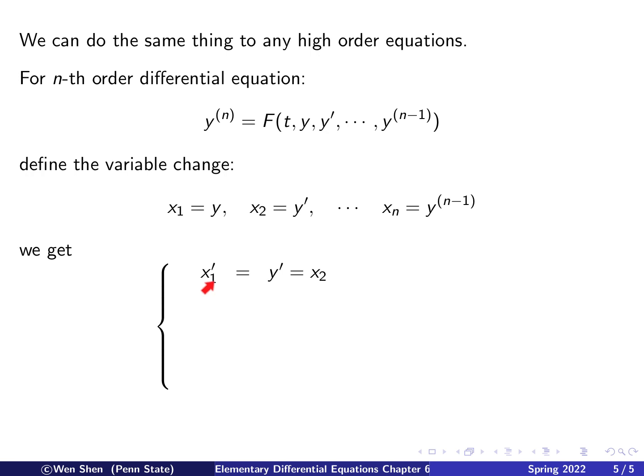So let's look at x1 prime. What is x1 prime? Well, it's y prime, and then y prime is x2. So x1 prime is x2. And then similarly, x2 prime will be y double prime, which would be x3. So x2 prime is x3. And you can continue this all the way to xn minus 1 prime. That will be taking one more derivative of xn minus 1. That will get you y to the n minus 1 derivative, because it will be the one before that. And that is exactly xn. So for the first n minus 1 equations, the right-hand side has only one term, which is the next x that you defined. And that is because of the way we define the x's.